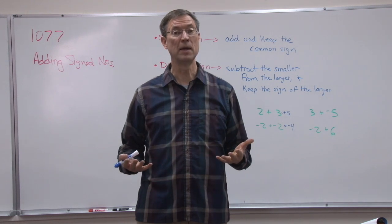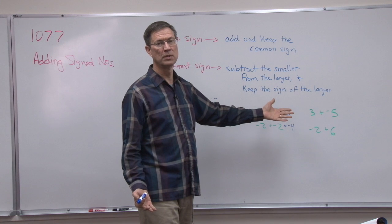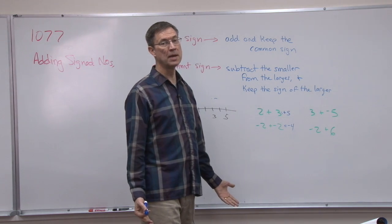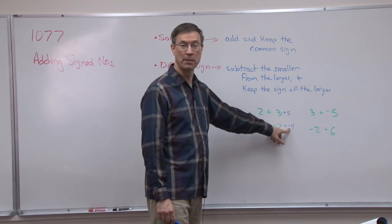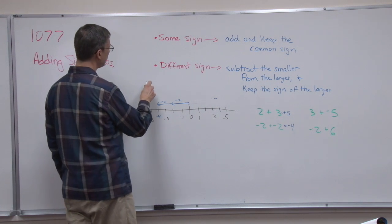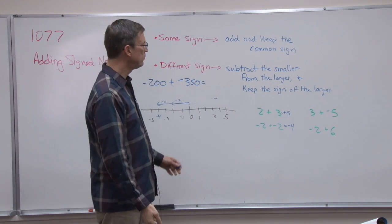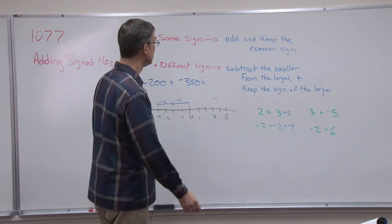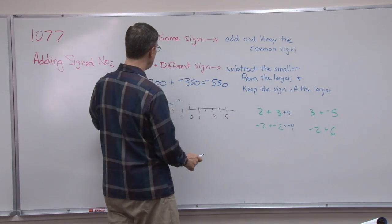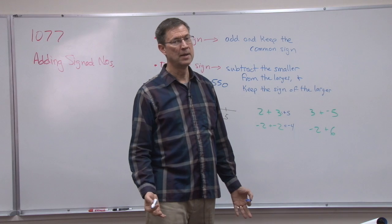Adding when the signs are the same, add and keep the common sign. Look at the examples: positive two plus positive three equals positive five. You know two plus two is four — you've known that since kindergarten. We're just saying that if it's negative two plus negative two, the signs are the same, so the answer has the same common sign — both were negative, so the answer is negative. For a big number like negative 200 plus negative 350, just add 200 plus 350 to get 550, then keep the common negative sign: negative 550.